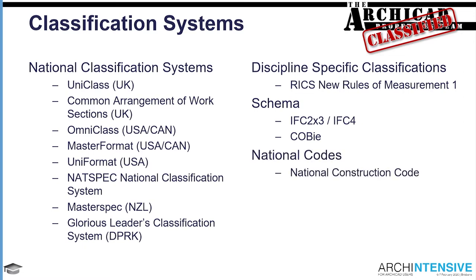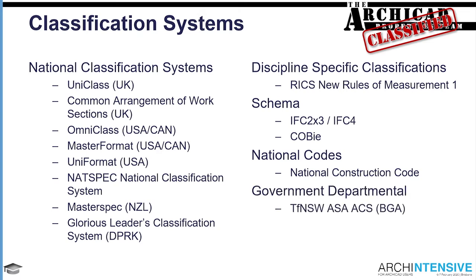You've also got national codes — the construction code. We talk about Class 1 buildings, Class 6 buildings. We then have structures within that national classification system that look at types of rooms and things like that, so we classify rooms as to whether they're habitable or non-habitable. It's important that we have all these systems that reflect all that sort of stuff. We've also got government departmental systems — there's the Transport for New South Wales Asset Standards Authority Asset Classification System. All sorts of organisations have these systems.